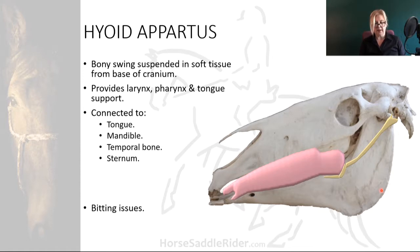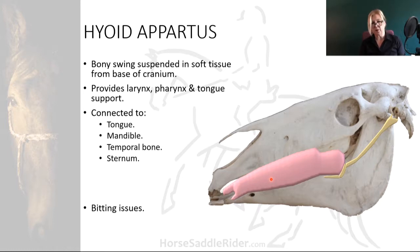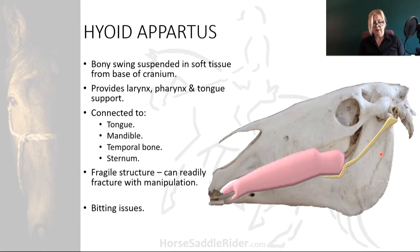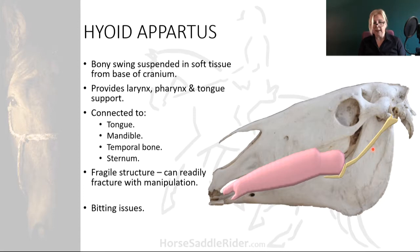It's worth noting that bitting issues may be connected with this arrangement. Because of these connections, some extensive muscle releases may be possible via soft tissue manipulation of the hyoid connections. However, it is highly fragile and hence vulnerable as a structure and can readily fracture if the horse retracts the tongue should manipulation be attempted poorly by a therapist.